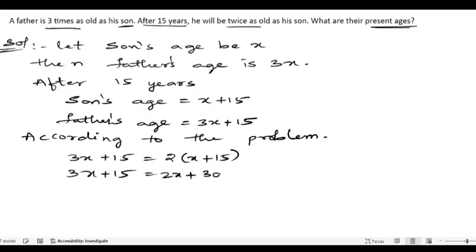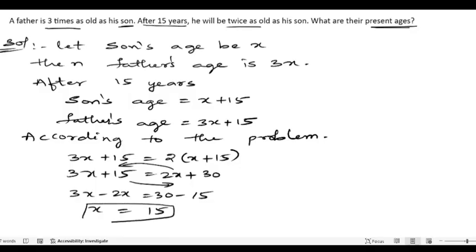Send 2X to that side and bring 15 here: 3X - 2X = 30 - 15, so X = 15. We got the son's age.